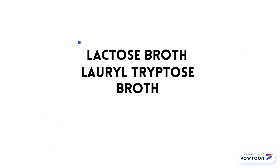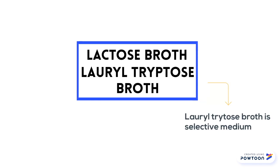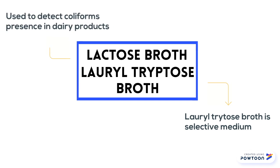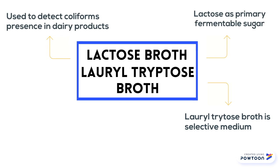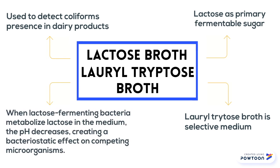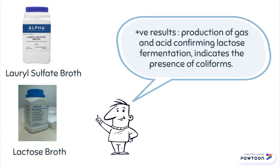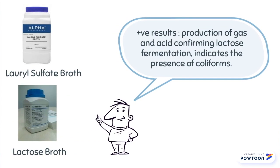Lactose broth and lauryl tryptose broth, a selective medium, are used to detect coliforms in dairy products. Lactose is used as the primary fermentable sugar. When lactose-fermenting bacteria metabolize lactose in the medium, the pH decreases, creating a bacteriostatic effect on competing microorganisms. Positive results for both broths are seen as production of gas and acid, confirming lactose fermentation, thereby indicating the presence of coliforms.